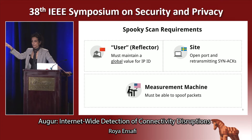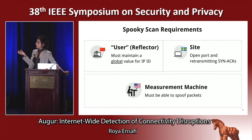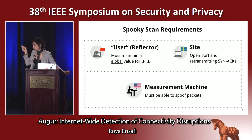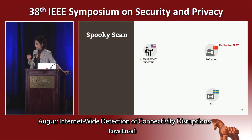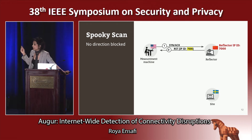For SpookyScan, a user doesn't need to be an end user, so from now on I call it a reflector. For SpookyScan, a reflector needs to maintain global IPID behavior — meaning the IPID values have to be generated by a shared global counter regardless of what packets go through or their destination. By observing this counter at each time, we can guess how much traffic the machine has generated. SpookyScan starts by a measurement machine sending a SYN packet to a reflector, which maintains global IPID behavior. In response, I receive a reset, and in that reset I see the current IPID value.